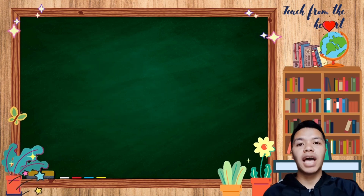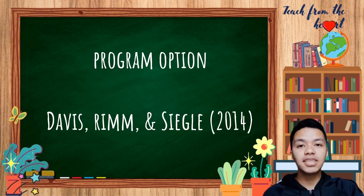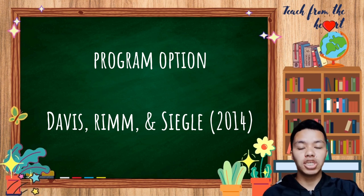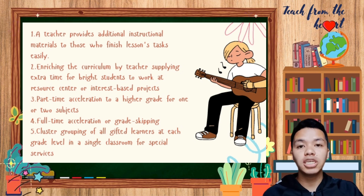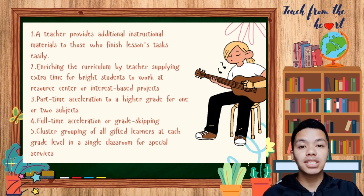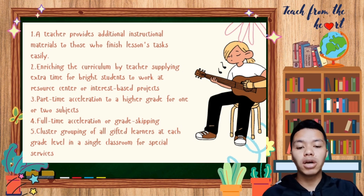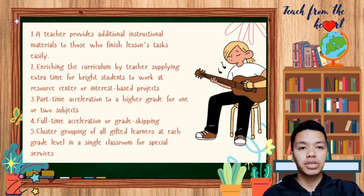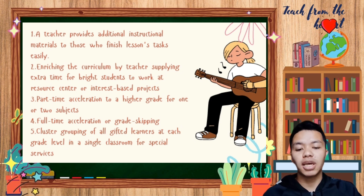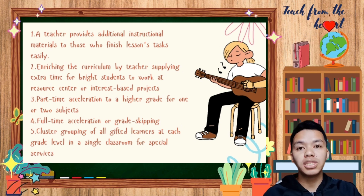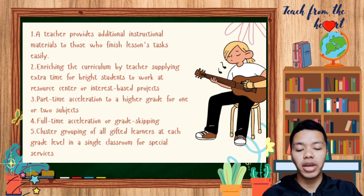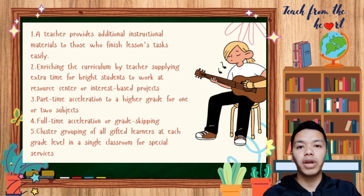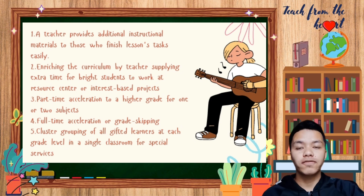According to Davis, Ream, and Seagal (2014), program options range from simple to complex. These include: a teacher providing additional instructional materials to those who finish tasks easily; enriching the curriculum with extra time for bright students at resource centers or interest-based projects; part-time acceleration to a higher grade for one or two subjects; and full-time acceleration or grade skipping. Fifth is cluster grouping of all gifted learners at each grade level in a single classroom for special services.